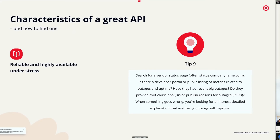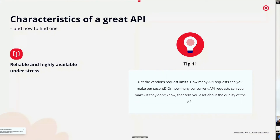Search for a vendor status page — is there a developer portal or public listing of metrics related to outages and uptime? Have they had recent major outages, and do they provide root cause analysis? When something goes wrong, you want an honest, detailed explanation that assures you things will improve. Also get the vendor's request limits: how many API requests can you make per second, or how many concurrent requests? If they don't know, that tells you a lot about the quality of their API.